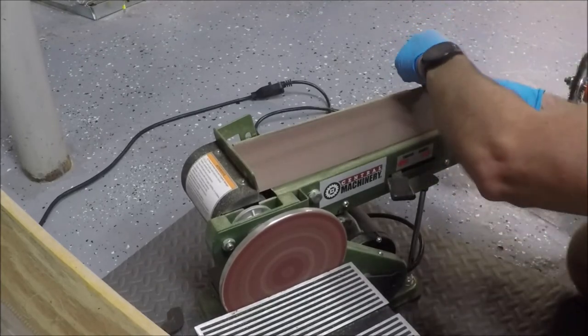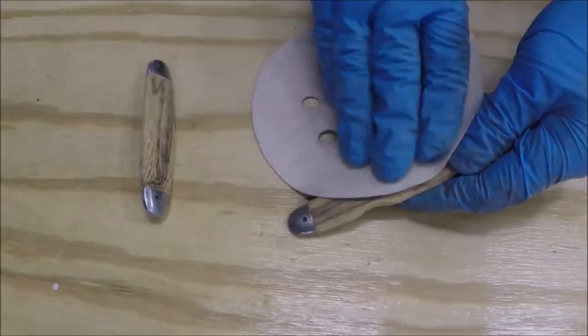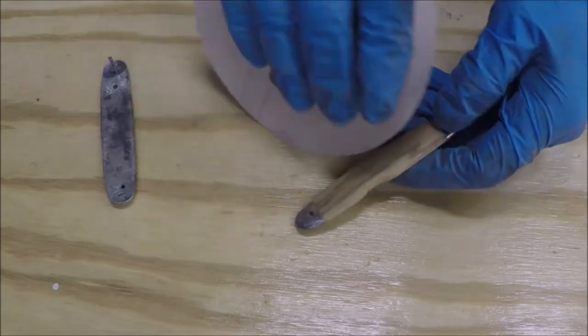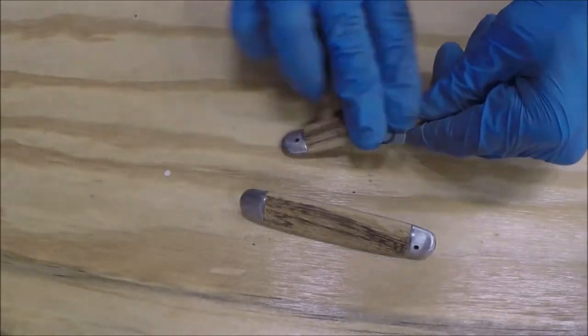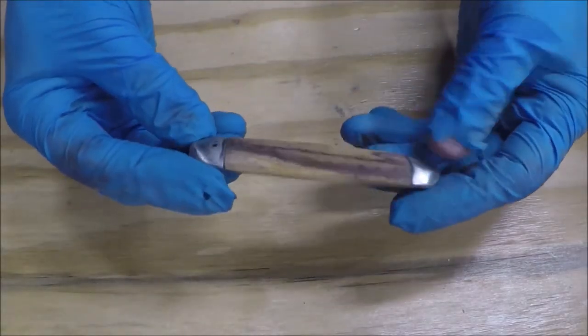After that, I got some sheets of sandpaper yet again and took my time. Worked my way up from 80 grit on the belt sander, 120, 220, and 320 within the different sheets of sandpaper. It came out pretty well.